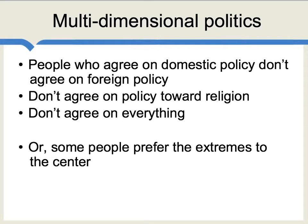So what does multi-dimensional politics mean? Let's consider some specific examples. You have multi-dimensional politics when people who agree on domestic policy do not, in general, have the same sets of opinions on foreign policy. Alternatively, you could imagine that people who agree on domestic policy don't agree on policy toward religion. And most generally, if you stipulate that they don't agree on everything, what you have are a number of different directions in which political opinion splits.